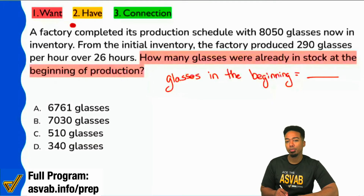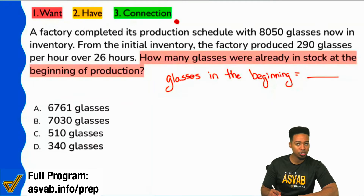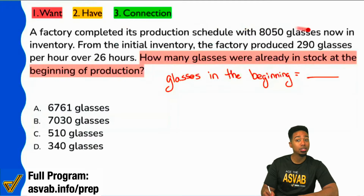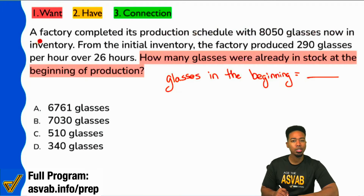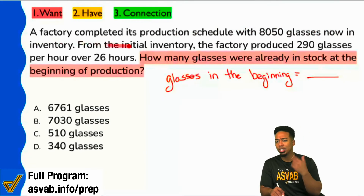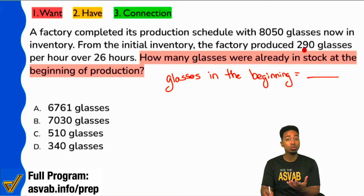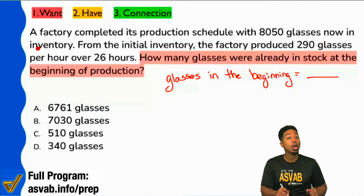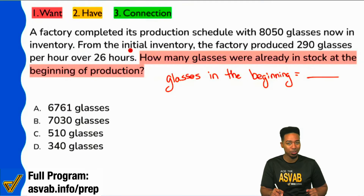A factory completed its production schedule with 8,050 glasses now in inventory. From the initial inventory, the factory produced 290 glasses per hour over 26 hours.